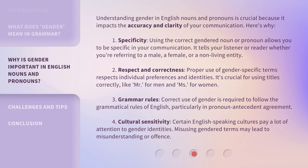Understanding gender in English nouns and pronouns is crucial because it impacts the accuracy and clarity of your communication. Here's why. First, specificity: using the correct gendered noun or pronoun allows you to be specific in your communication — it tells your listener or reader whether you're referring to a male, a female, or a non-living entity. Second, respect and correctness: proper use of gender-specific terms respects individual preferences and identities. It's crucial for using titles correctly, like Mr. for men and Ms. for women.